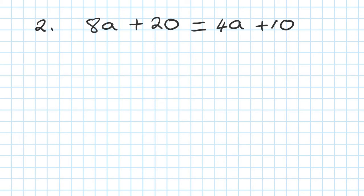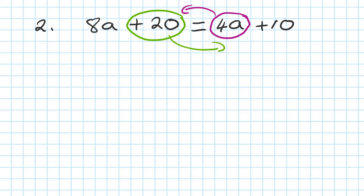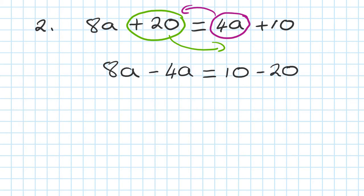The way to go about this — this is 4a here, I move it on this side. And the plus 20, I move on this side. So on the left, I'll let it be 8a, and 4a I move on this side, becomes minus 4a. That is equal to 10, and I move the 20 on this side, becomes minus 20.